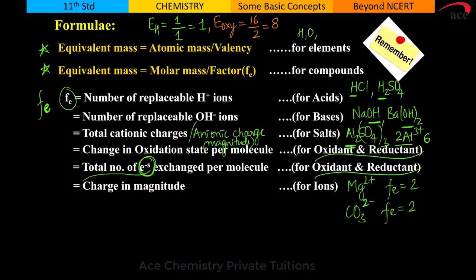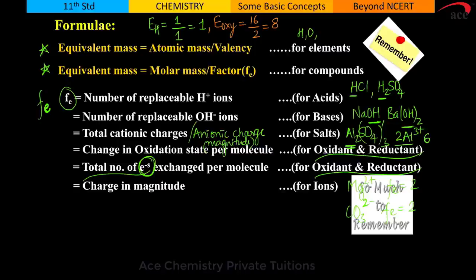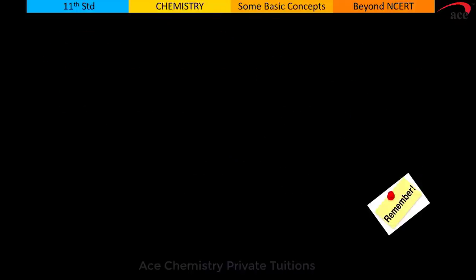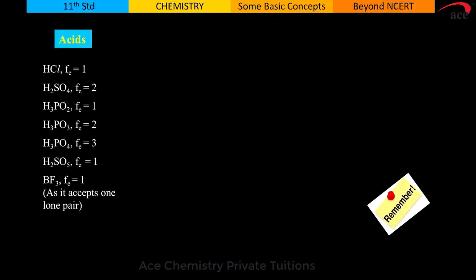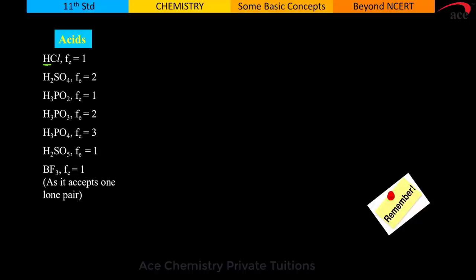You should remember all of this as n-factor for the different types of substances. You can pause this video and write down all these things in your notebook. For acids: n-factor for HCl is 1, and n-factor for sulfuric acid is 2.